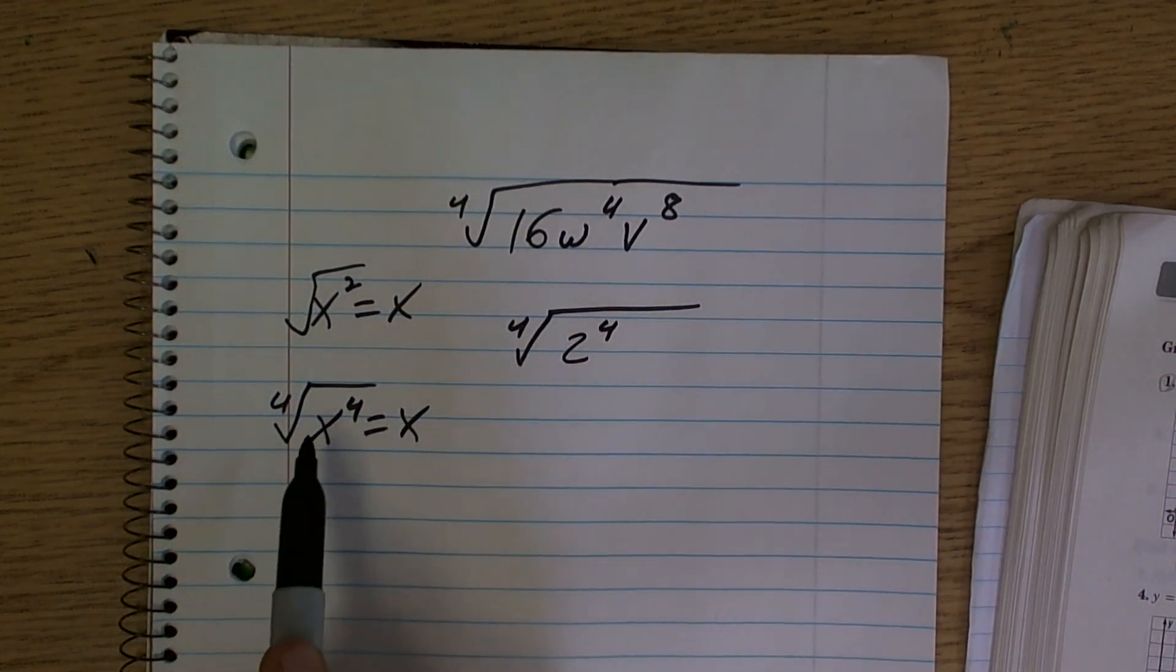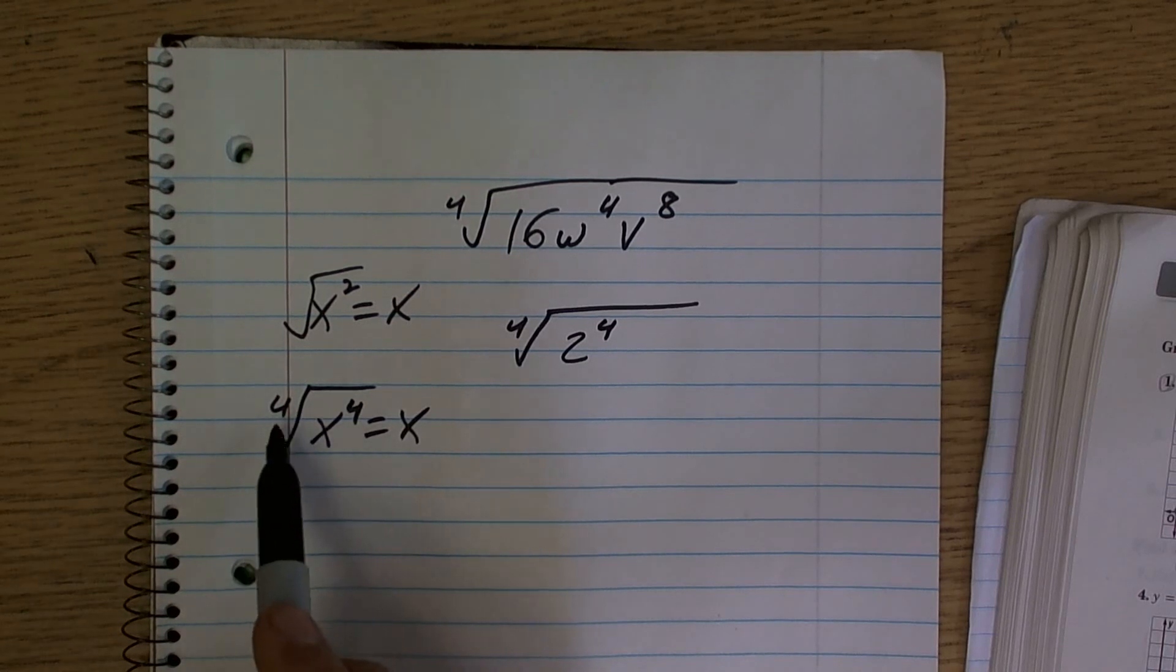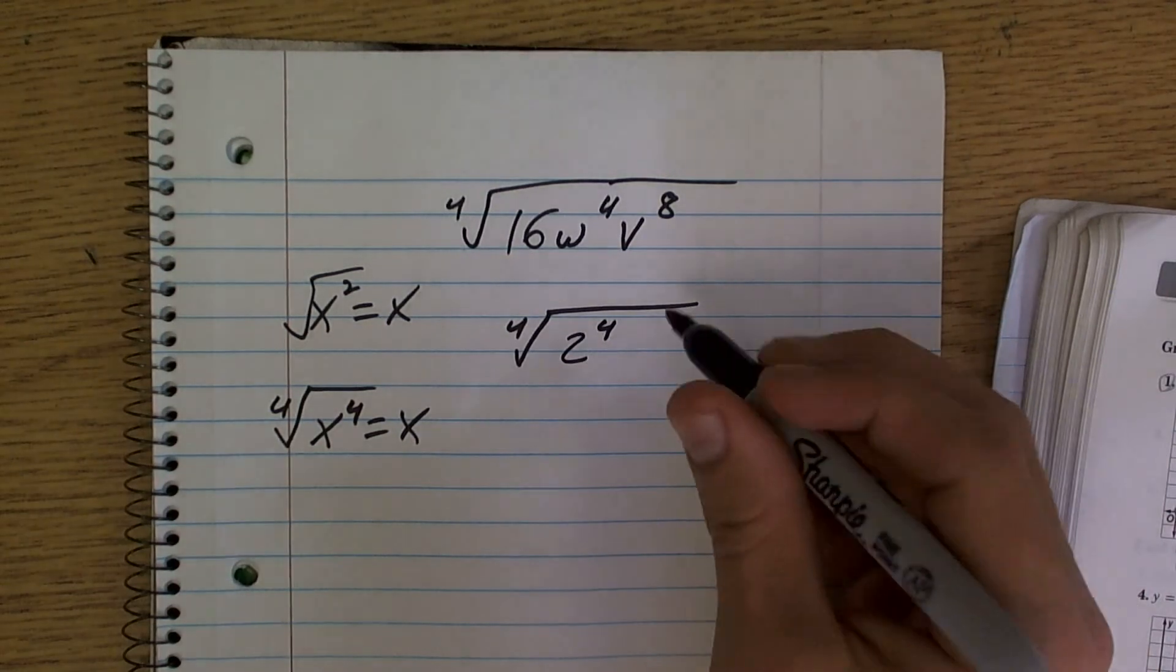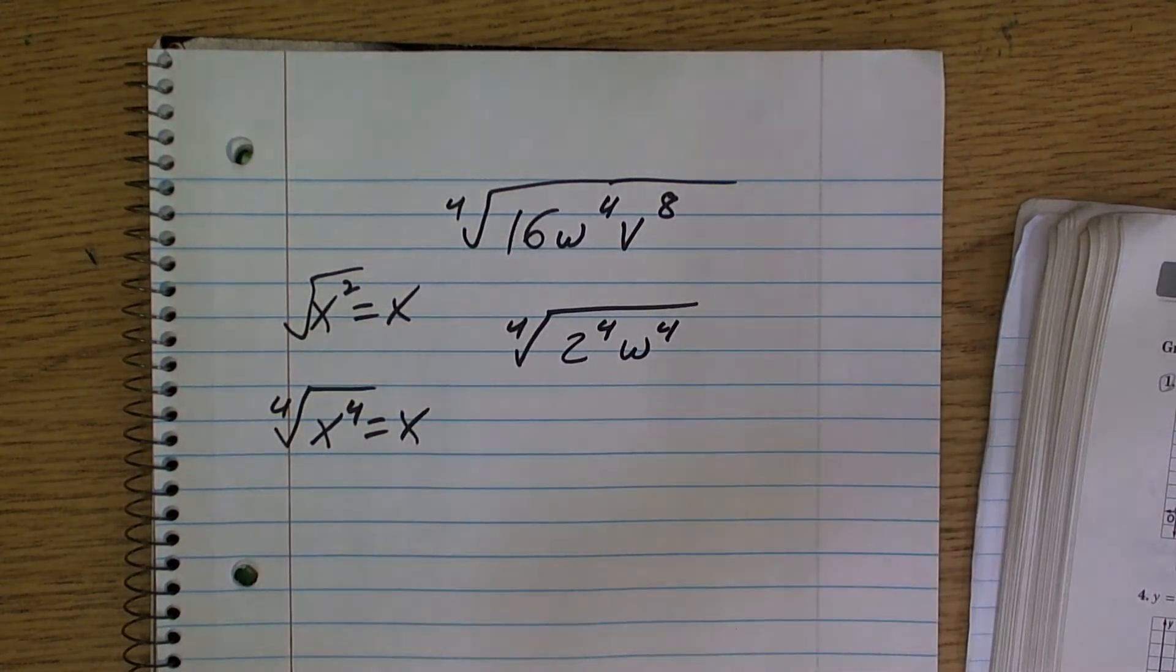And the reason, remember we want to use this rule because we want the fourth root of something to the fourth to cancel out. Then I already have w to the fourth power so that's good.